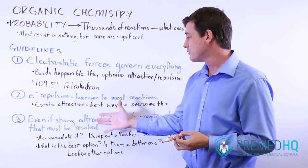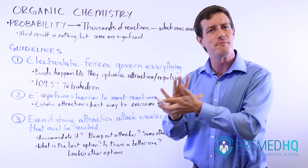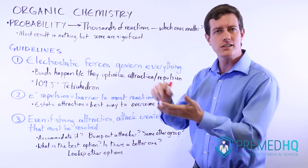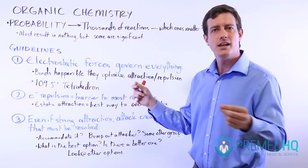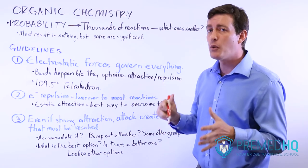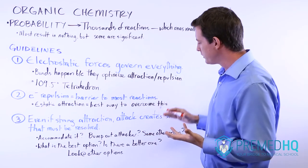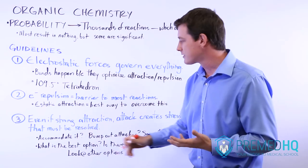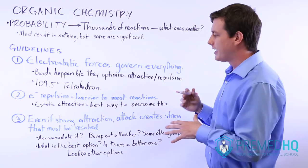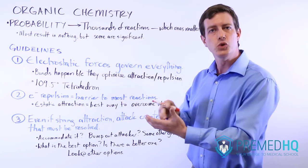The third thing to realize is that even if you have a strong attractive force that can overcome electrostatic repulsion, any time you attack one species with another or any interaction occurs, that creates stress on the system. The system has to find a way to resolve that stress. Does it accommodate the new species? Does it boot it out? Does it have a leaving group it would rather have leave than the new thing that just entered?